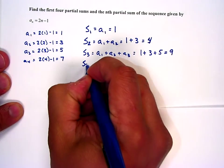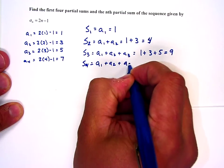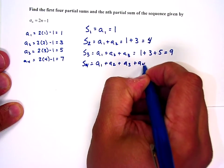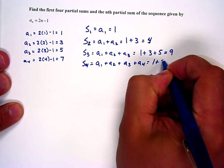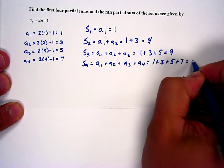And the fourth partial sum is a sub 1 plus a sub 2 plus a sub 3 plus a sub 4. So that's 1 plus 3 plus 5 plus 7, which is 16.